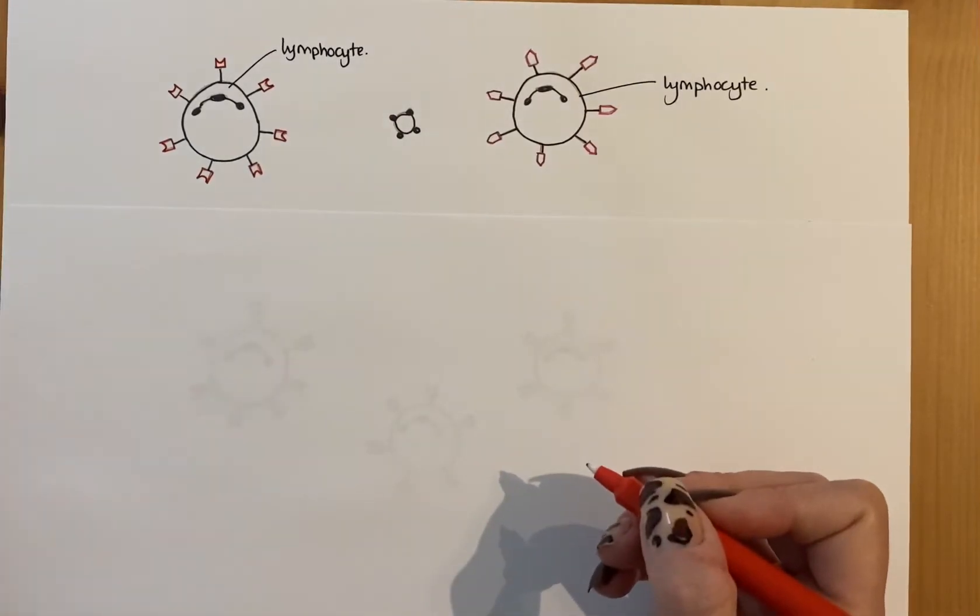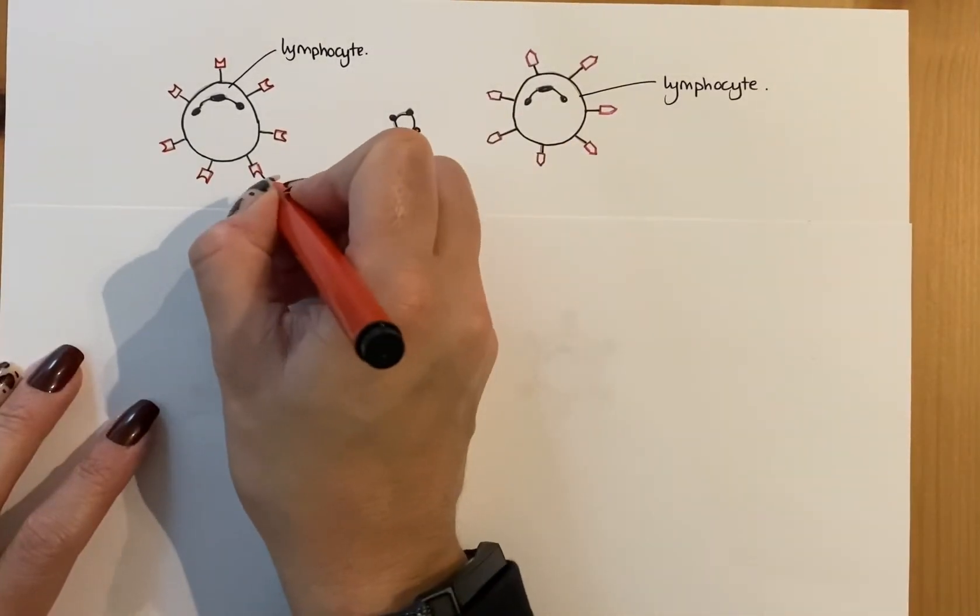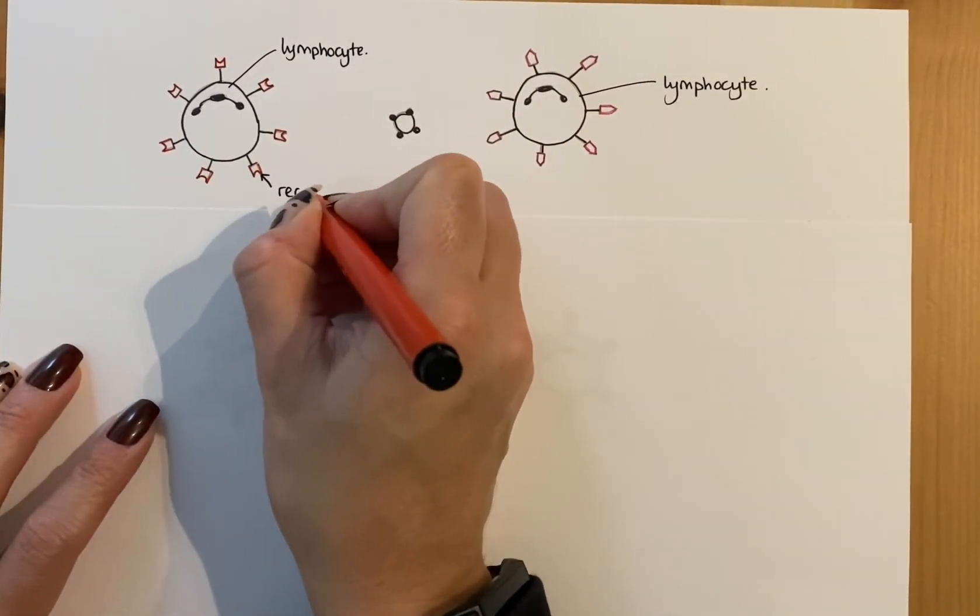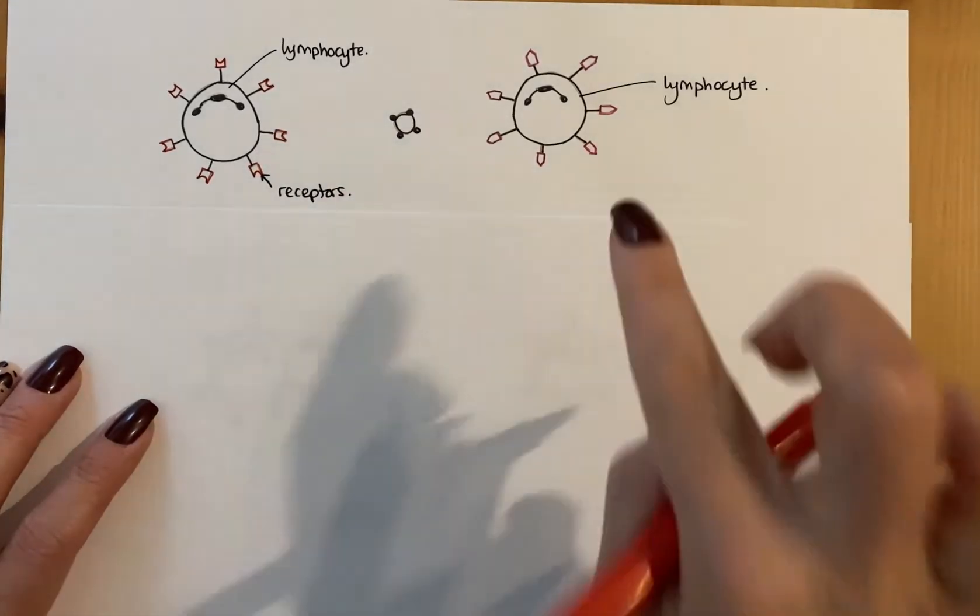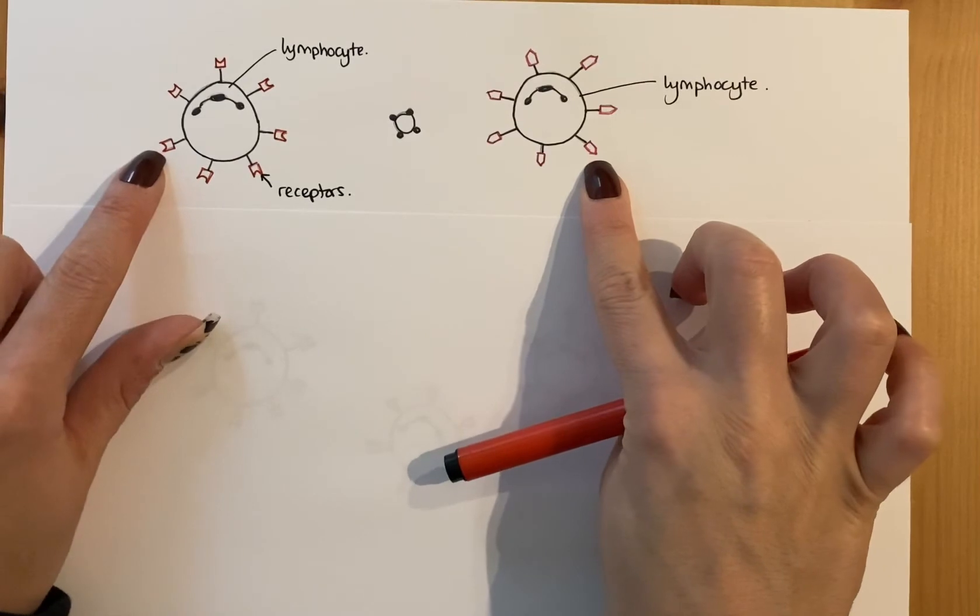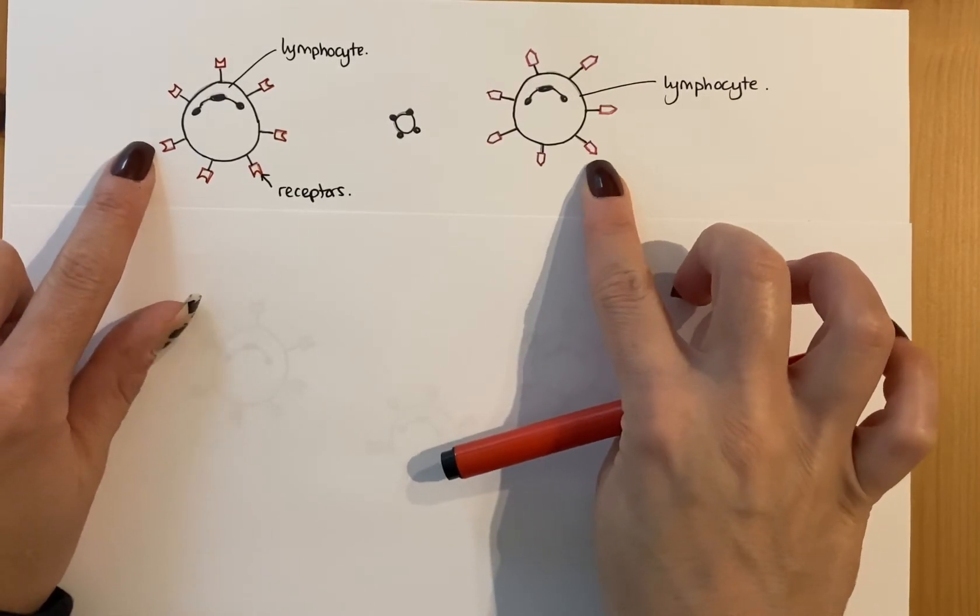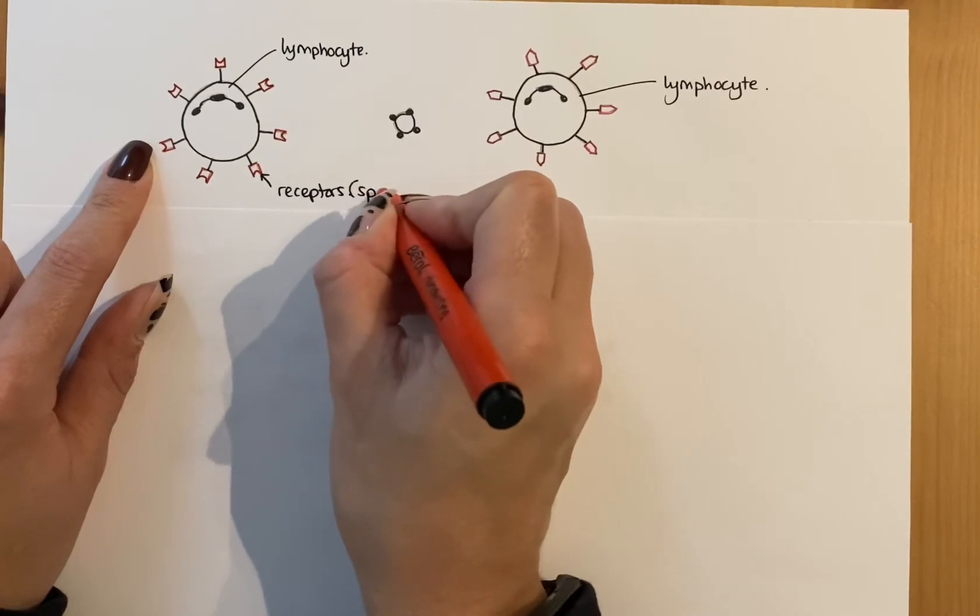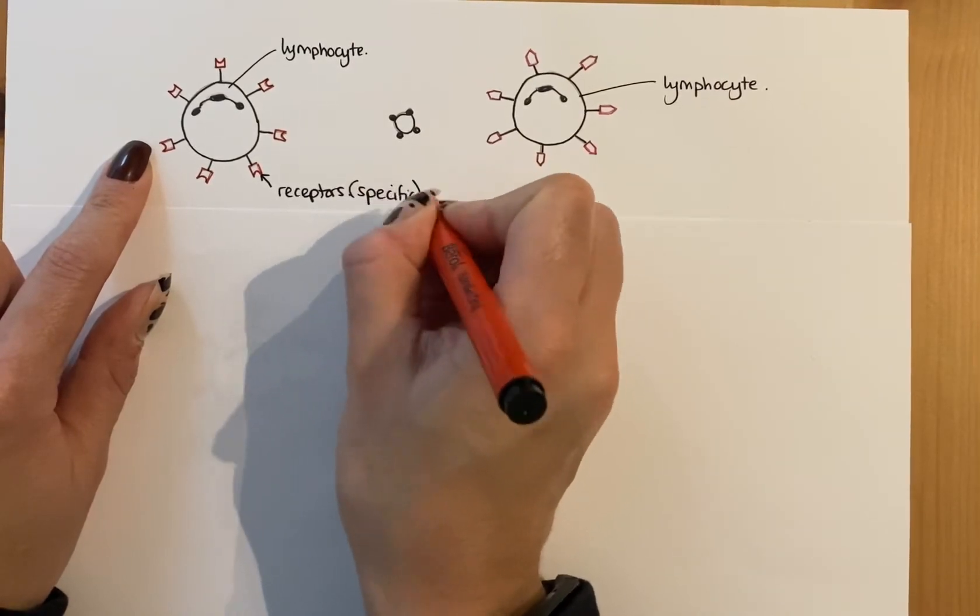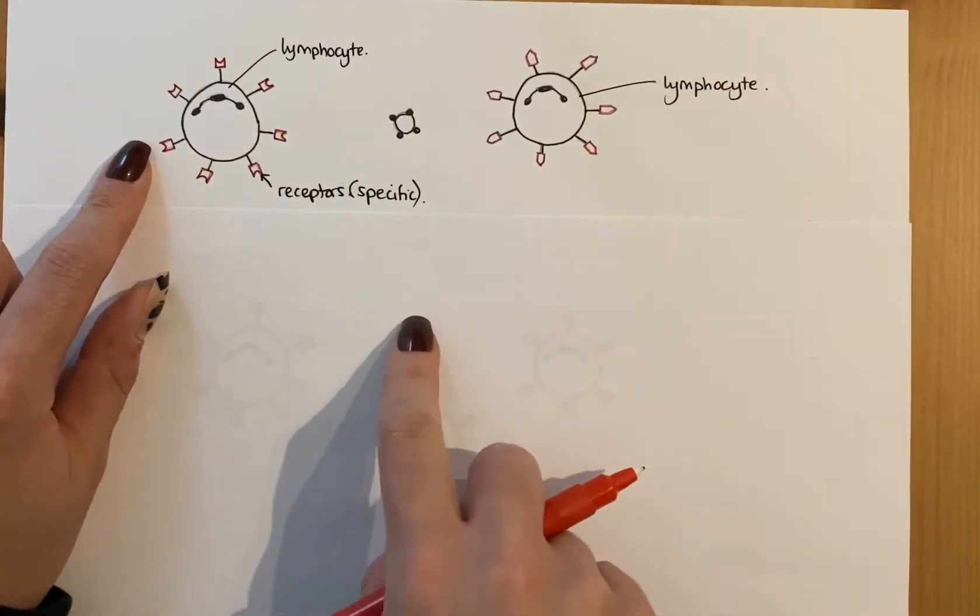Now you can tell these are lymphocytes because they have receptors on their exterior surface. These are receptors too. Now notice the difference. One has a different shape to the other. So these receptors are specific and they're specific to a particular antigen.